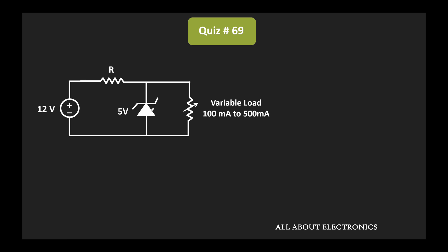Let's say the current flowing through the Zener diode is equal to Iz, while the current flowing through the load is equal to Il. Similarly, the current supplied by this voltage source is equal to Is. If we apply KCL at this node, then we can write Is is equal to Iz plus Il.